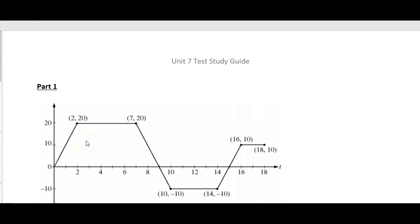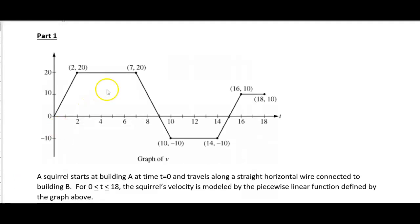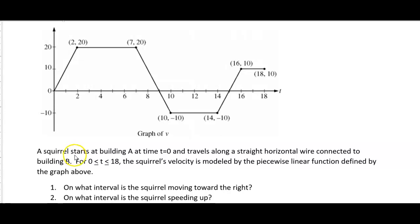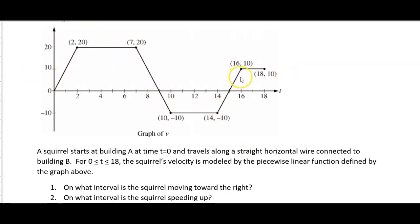Welcome to your Unit 7 test study guide. Let's get started with part one. We have a squirrel starting at building A at time t equals zero, traveling along a straight horizontal wire connected to building B over an 18-unit time interval. The squirrel's velocity is modeled by a piecewise linear function, so this graph represents the velocity of the squirrel.